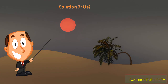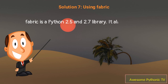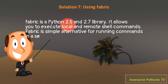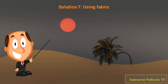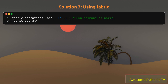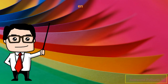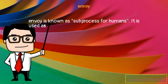Solution 7: Using Fabric. Fabric is a Python 2.5 and 2.7 library that allows you to execute local and remote shell commands. It is a simple alternative for running commands in a secure shell (SSH). Envoy is known as subprocess for humans and is used as a convenience wrapper around the subprocess module.